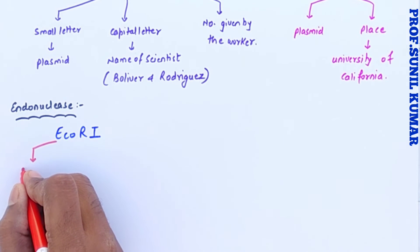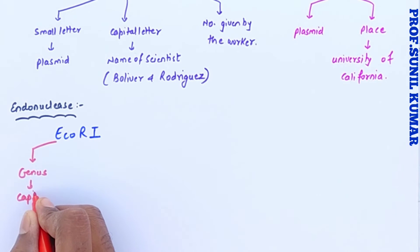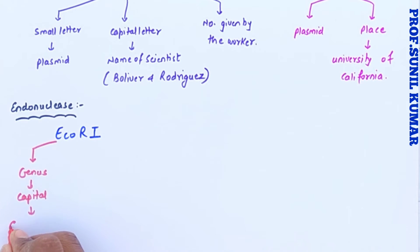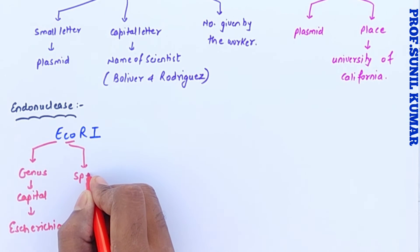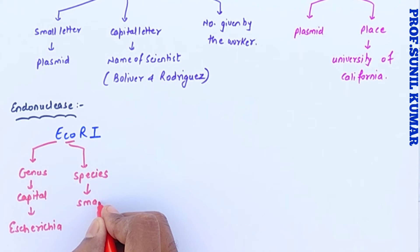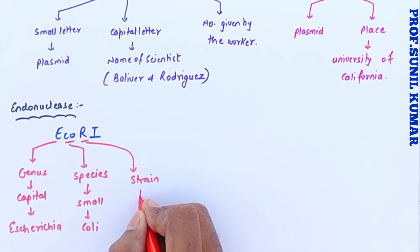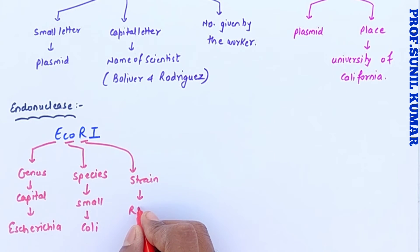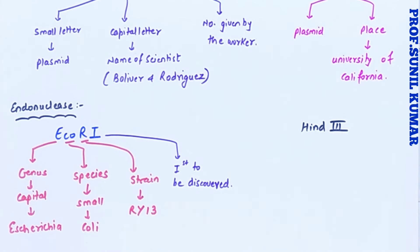In EcoRI, the first letter 'E' is capital, indicating the genus from where it has been isolated — that is Escherichia. 'co' is the species written in small letters, indicating coli. So 'Eco' stands for Escherichia coli. 'R' is the strain, that is RY13, so the first 'R' is taken. The number '1' indicates it was the first endonuclease to be discovered.